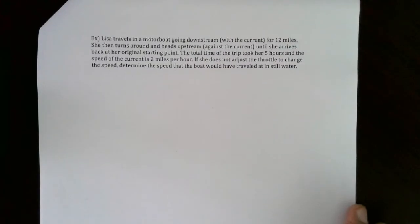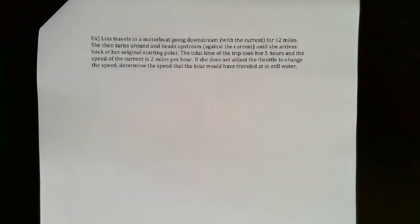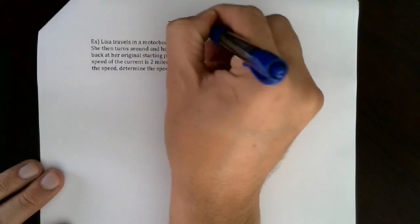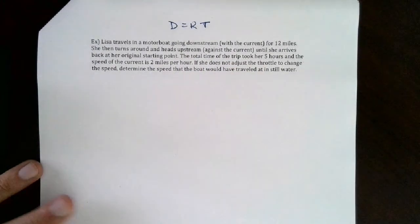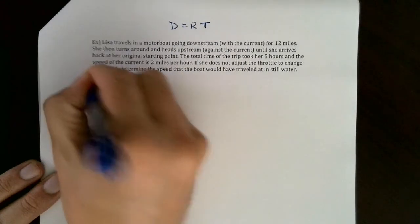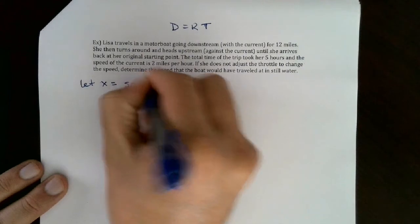Let's look at another example. Lisa travels in a motorboat going downstream - with the current, so the water pushes her faster - for 12 miles. Then she turns around and heads upstream against the current, which slows her down, until she arrives back at her starting point. The total trip took five hours and the speed of the current is two miles per hour. Determine the speed the boat would have traveled in still water.